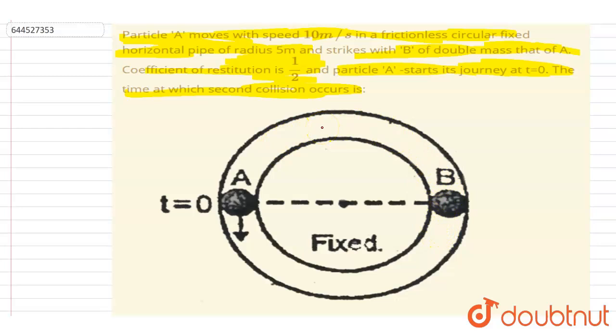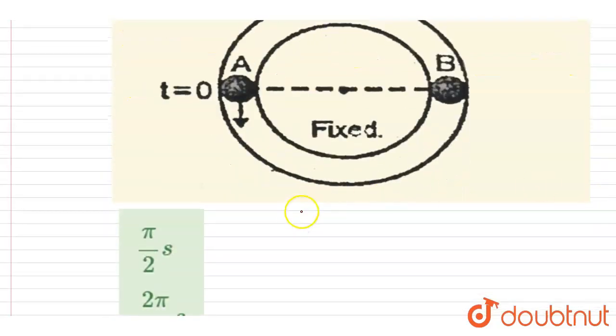velocity of separation. We know that e equals velocity of separation divided by velocity of approach, and e is given as half. If you see, the approach velocity with which it is coming toward B is 10 meters per second, given in the question.